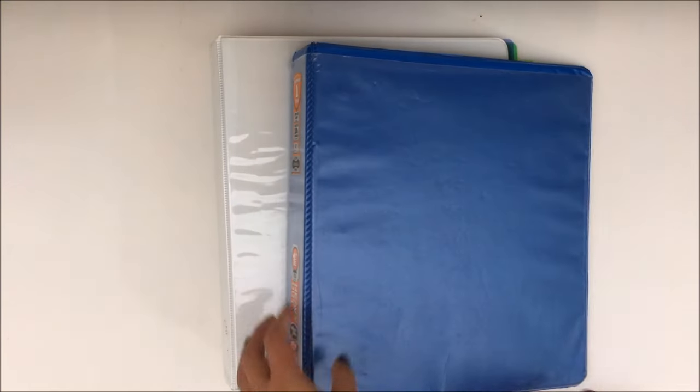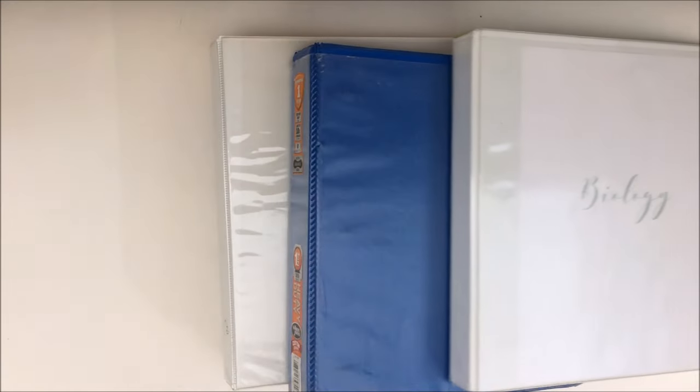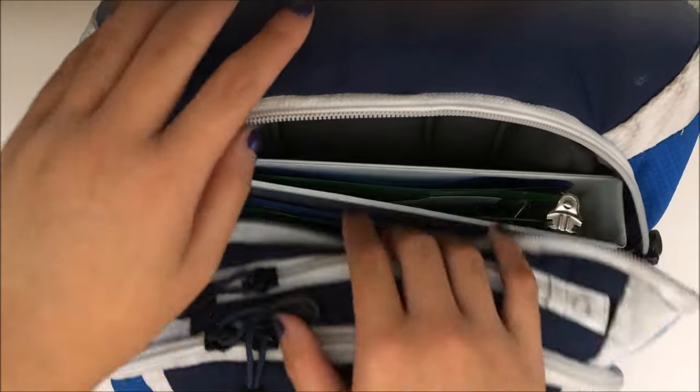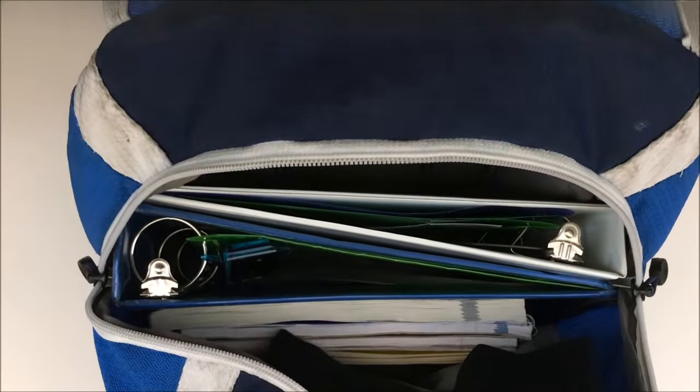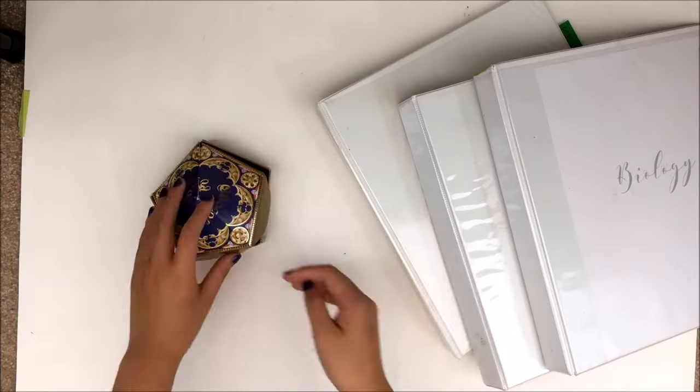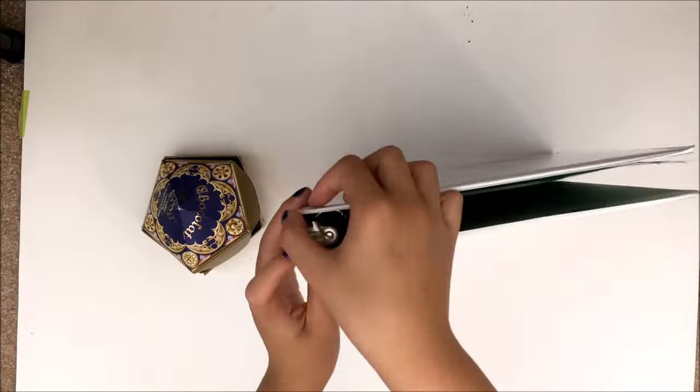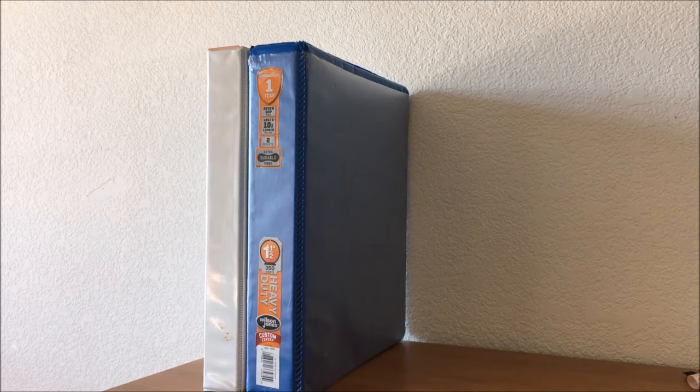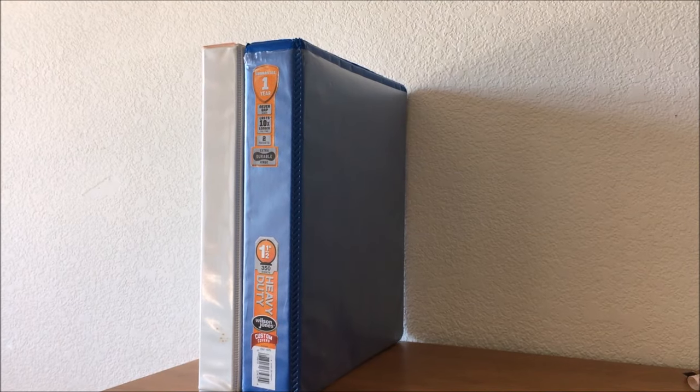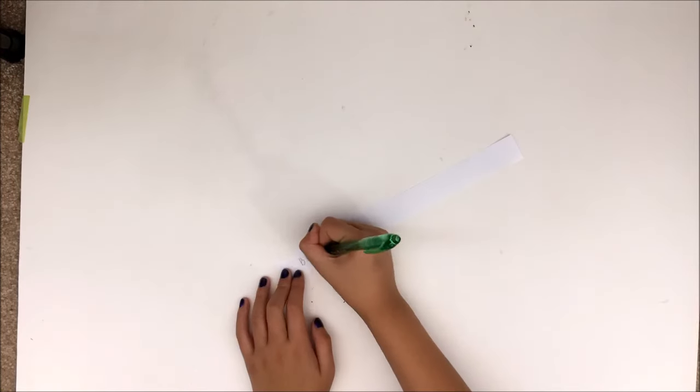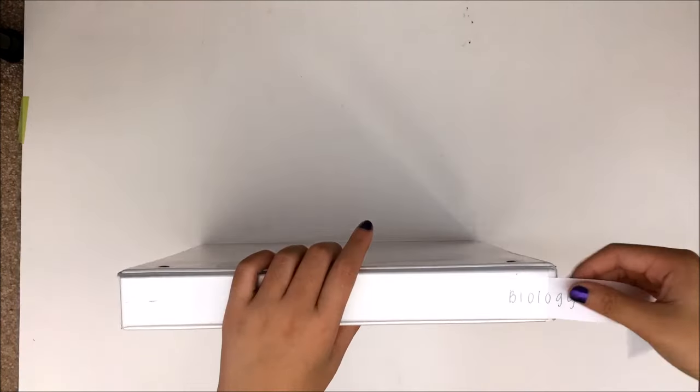If you have multiple binders, make sure you can easily tell the difference between them. This will depend on how your binders are stored. If you mainly see them on the top in your backpack, you can use different colored binders or put different colors of washi tape on the top. If you usually store them on a shelf with the spines showing, you can cut a sheet of paper into a thinner strip and write the subject on it, then slip it into the spine.